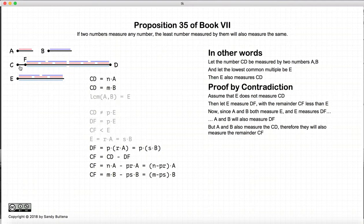Now CF is equal to CD minus DF. Now CD is a multiple of A, and DF is a multiple of A. So hence the result CF will also be a multiple of A, and similarly for B. So CF can be measured by A and B.